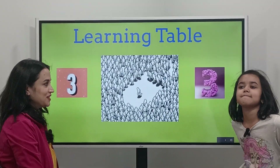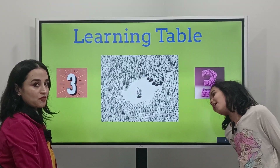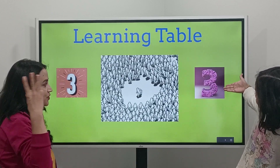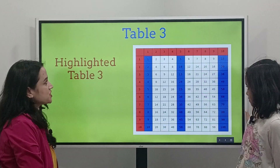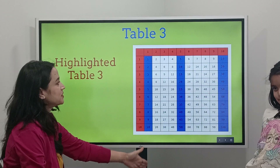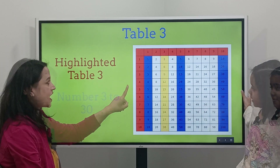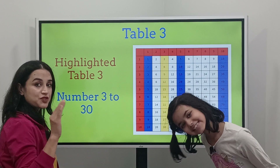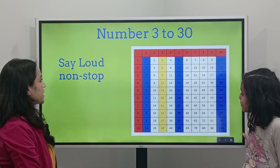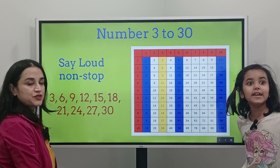Hi everyone, welcome back to Lena Speaking Play. In this video we're going to talk about Table 3. We have lots of tables here, but today we're going to focus on Table 3, which is going to be highlighted. Table 3 is from 3 to 30. Say it loud, non-stop!